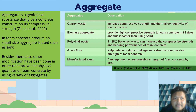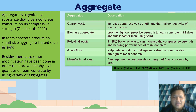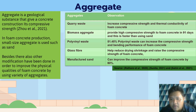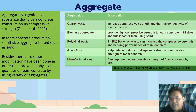Now we look at aggregate. Aggregate is a geological substance that gives concrete its compressive strength. In foam concrete production, small aggregates such as sand have been used. Various modifications have been made to improve physical qualities using different aggregates: quarry waste increases compressive strength and thermal conductivity; biomass aggregate provides high compressive strength at 91 days, faster than sand; adding 51.45% polyvinyl waste increases compressive strength and improves bending performance; glass fiber helps reduce drying shrinkage and raises compressive strength; and manufactured sand can improve the compressive strength of foam concrete by 60%.